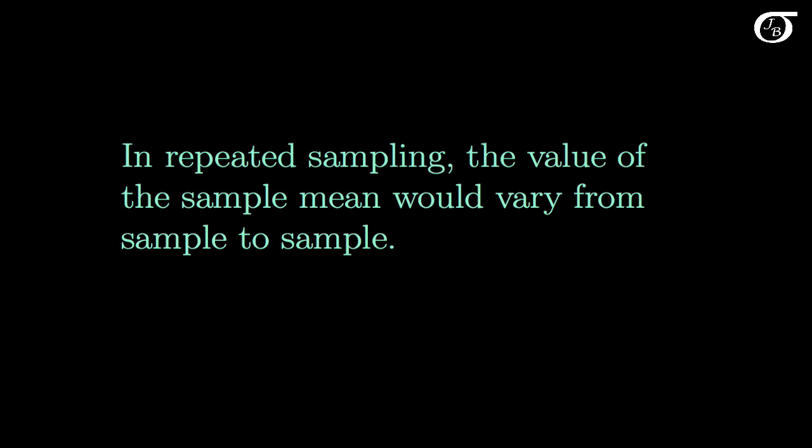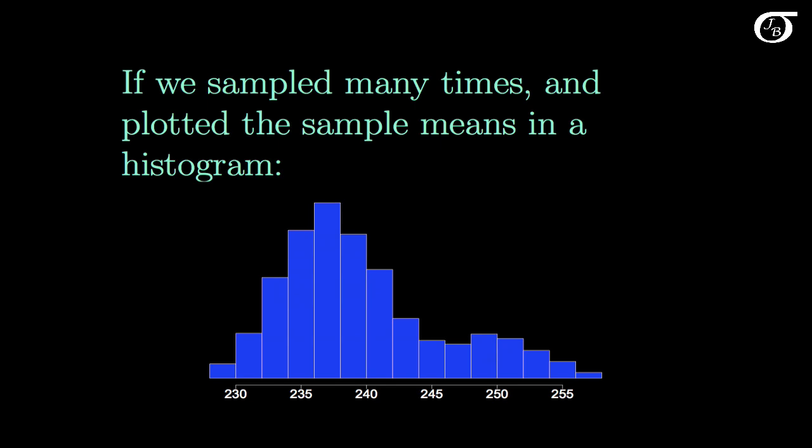In repeated sampling, the value of the sample mean would vary from sample to sample. If we sampled many times — we did it twice here, but I've sped up the process using a computer and done it a million times — and plotted those sample means in a histogram, it would look something like this. Because I've repeatedly sampled so many times, this histogram of sample means will very closely resemble the true sampling distribution of the sample mean in this scenario. For perspective, I'm going to put in the population mean mu with a red line — our value of mu, which is about 240.